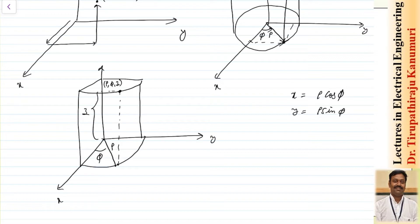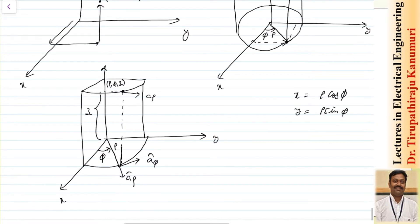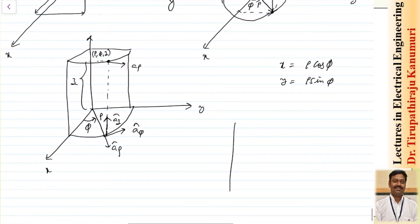Now let us see how to resolve each of these components into the x, y, and z coordinates, or vice versa, by preparing a conversion table between ax, ay, az and a_rho, a_phi, a_z. Note that the dot product is commutative, so reversing the order of a_phi and a_z does not matter.